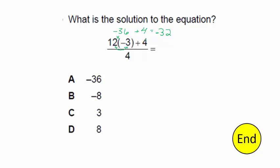We're at negative 32. Divide that by 4 and we're at negative 8, because when you divide a negative number by a positive, it stays negative. Choice B.